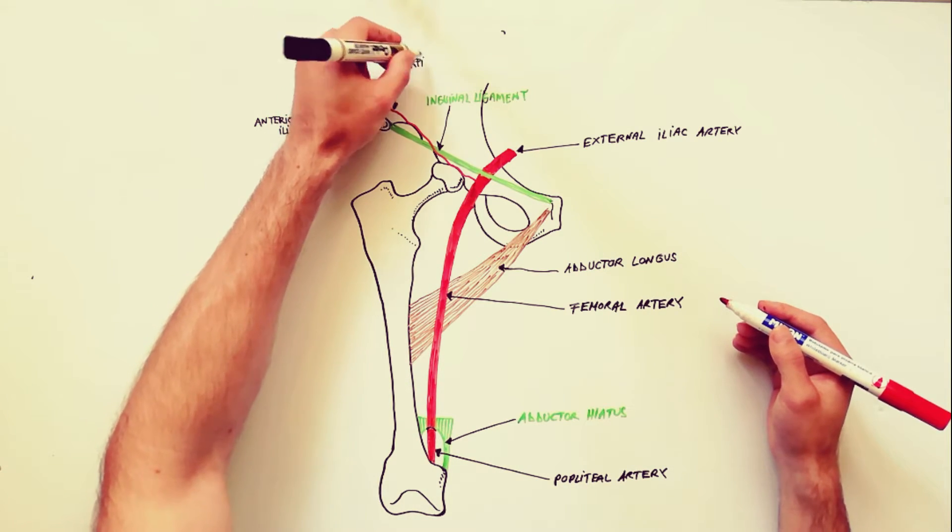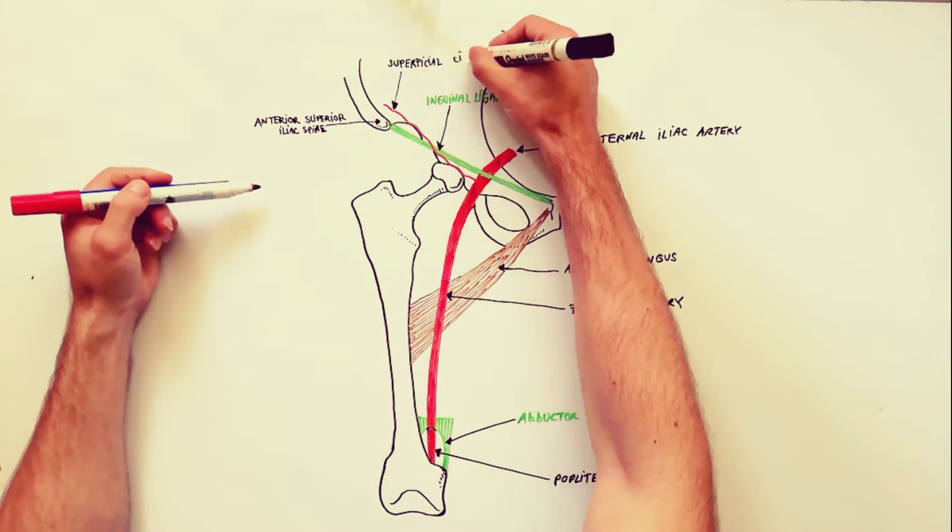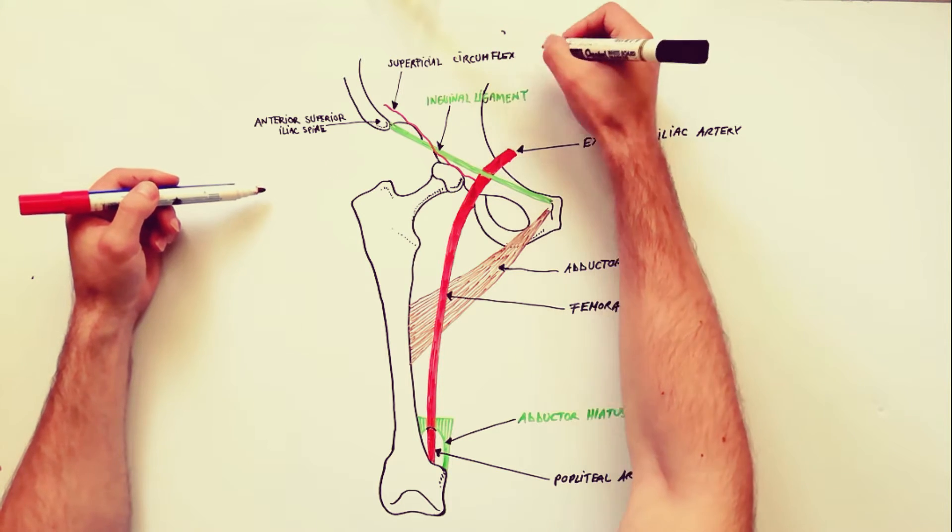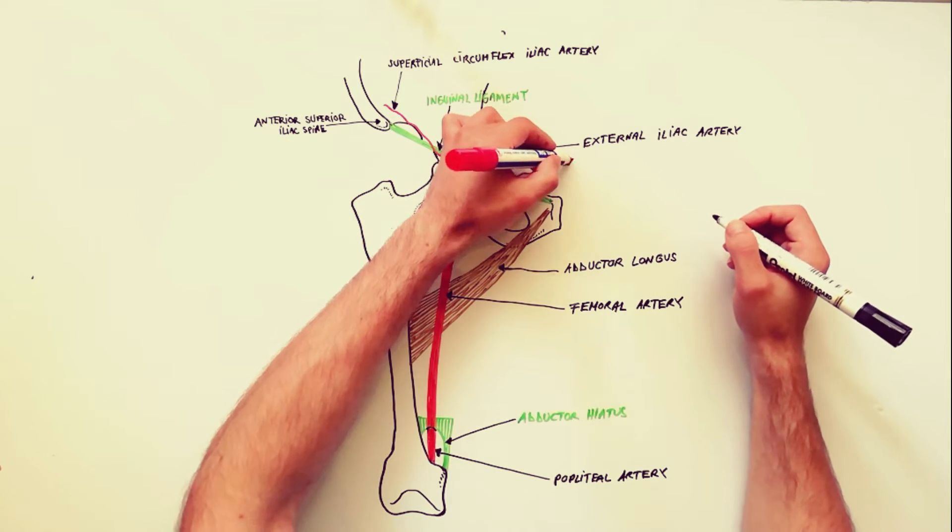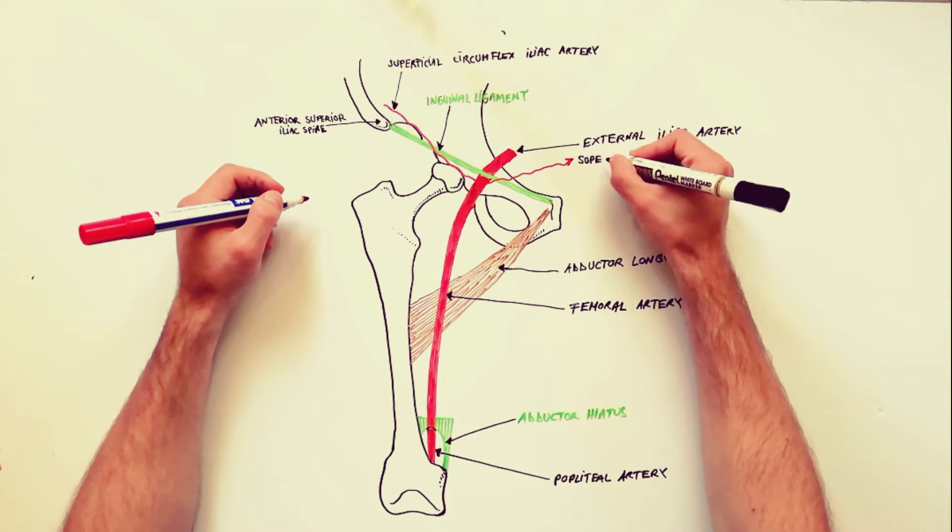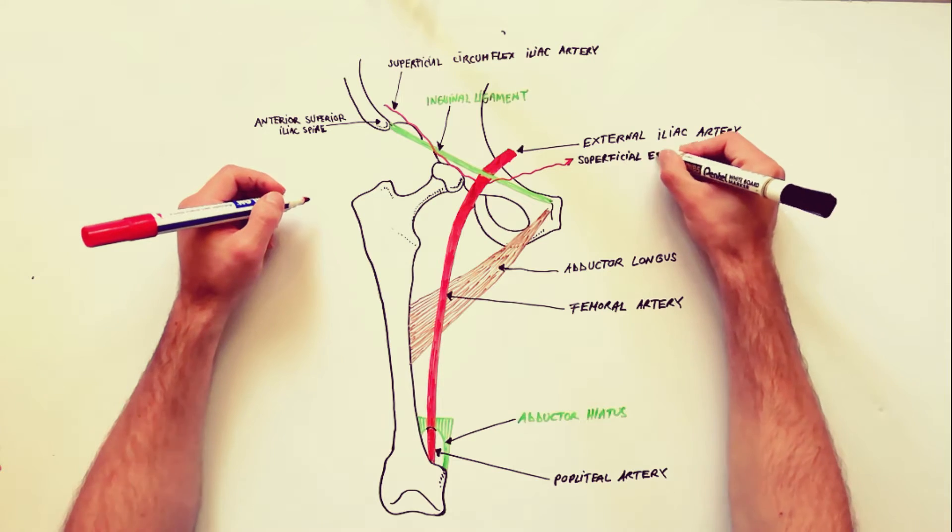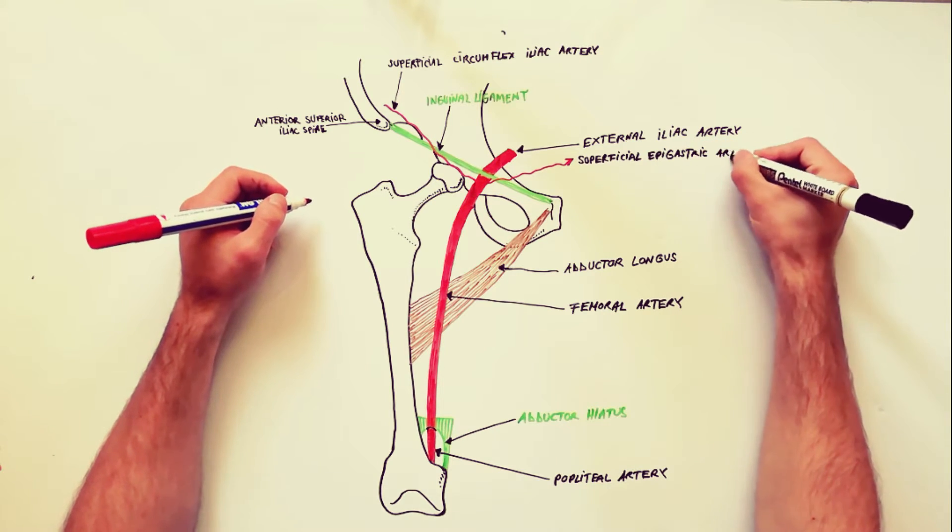The superficial circumflex iliac artery is a small branch that runs up to the region of the anterior iliac spine. The superficial epigastric artery is a small branch that crosses the inguinal ligament and runs to the region of the umbilicus.